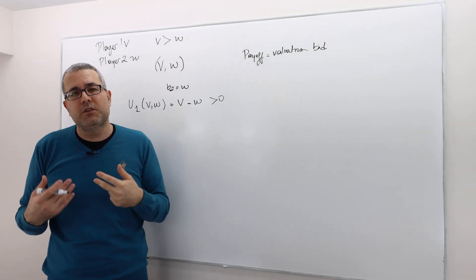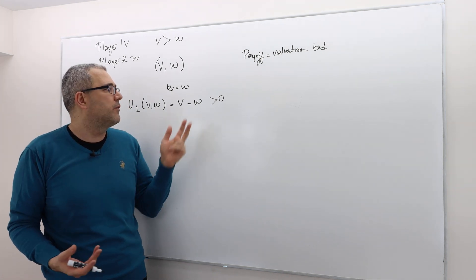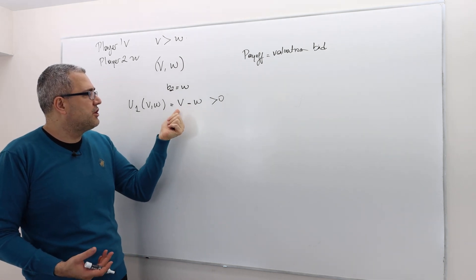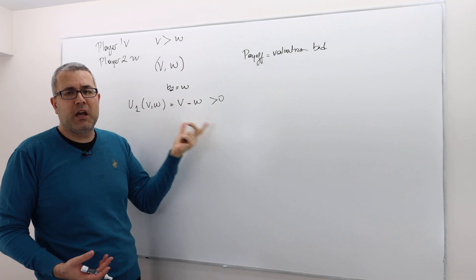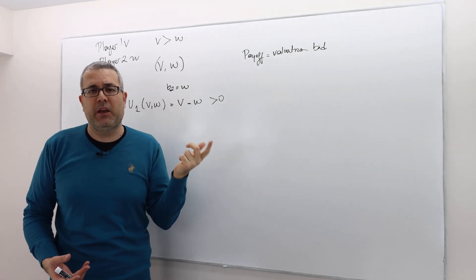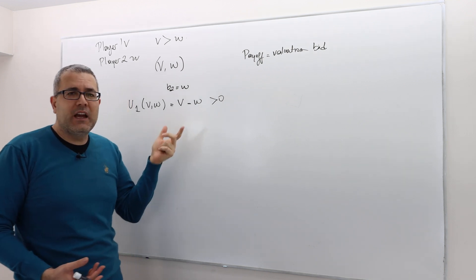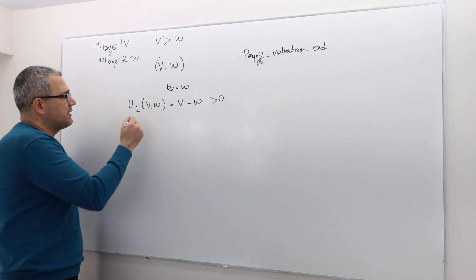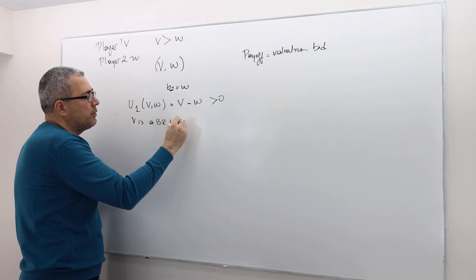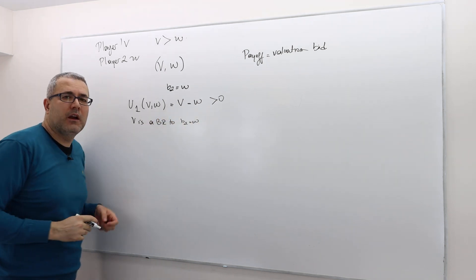For that reason, because you can't change any one of those parameters, player one can't increase his payoff more than that. Therefore, yes, V is, in fact, a best response to player two bidding W.